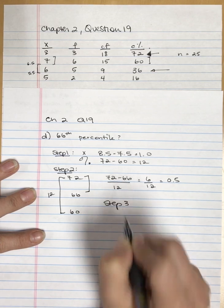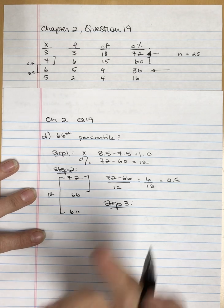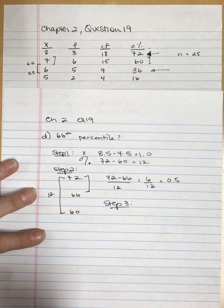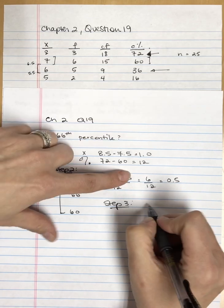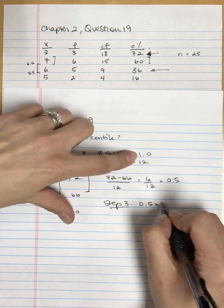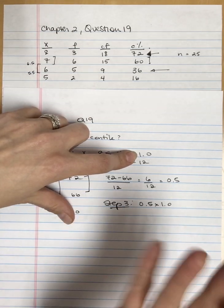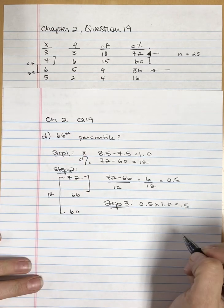Step three, I need to find that corresponding proportion on the x column, or the x scores. Now I'll take 0.5 from here and multiply it by the interval width, which right now is 1. This isn't always going to be the case. So I've got 0.5.